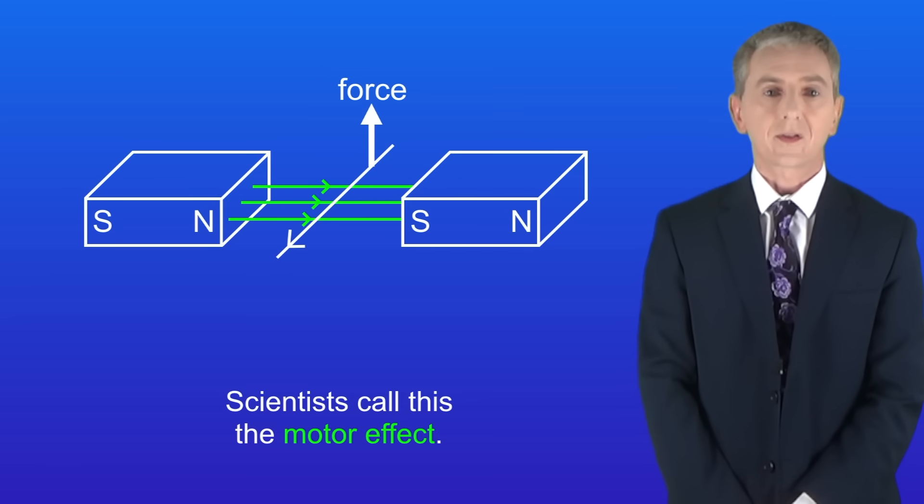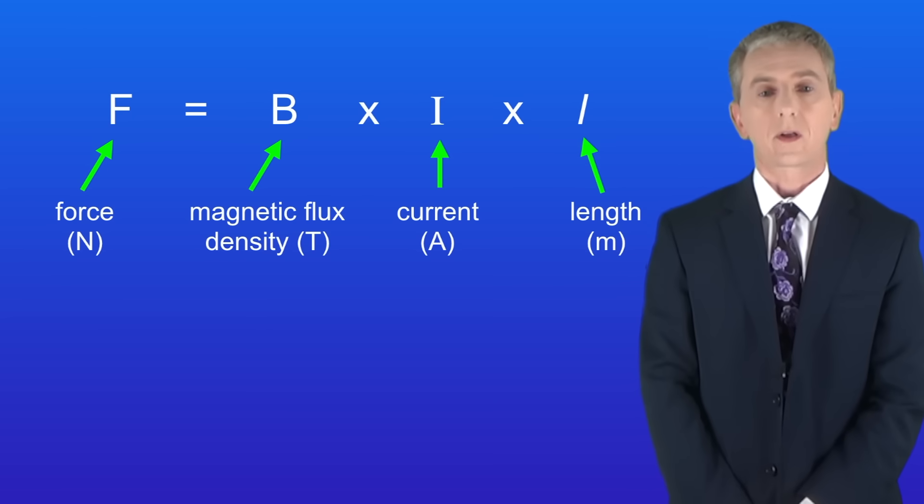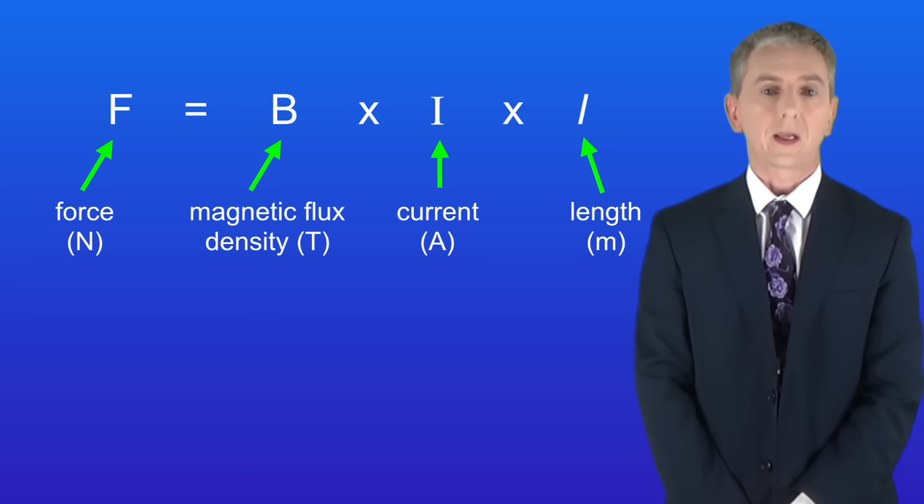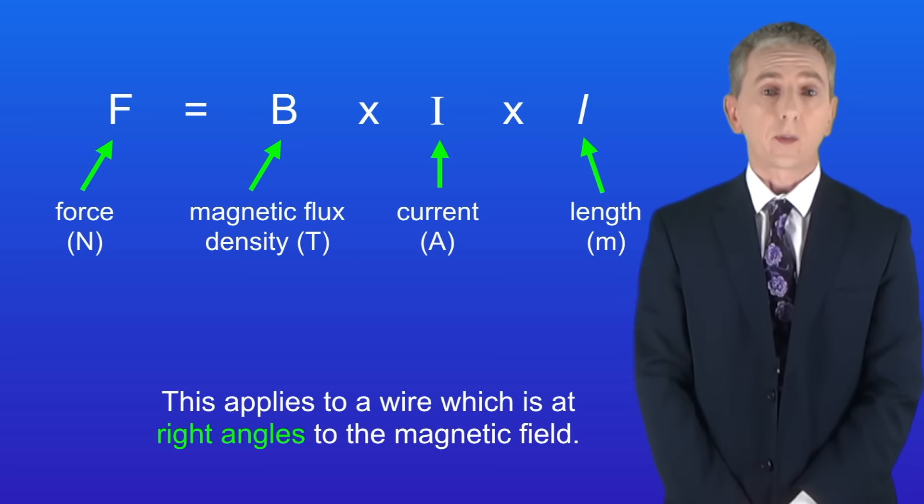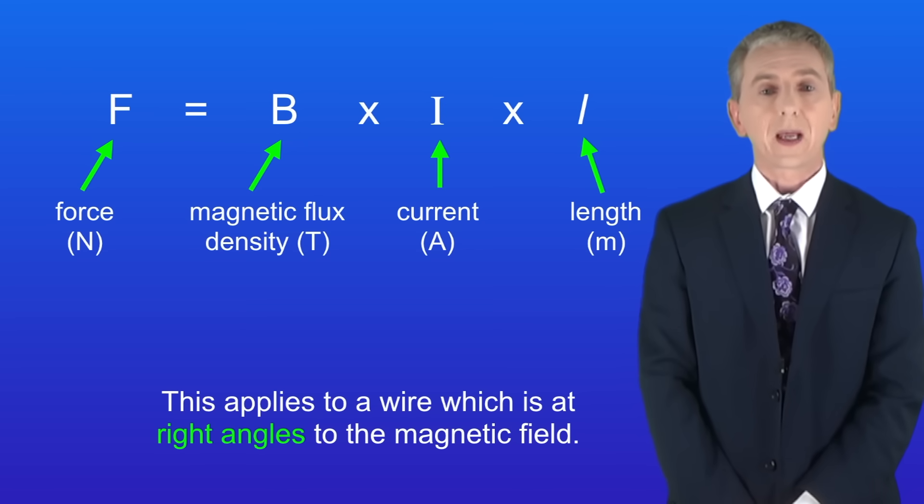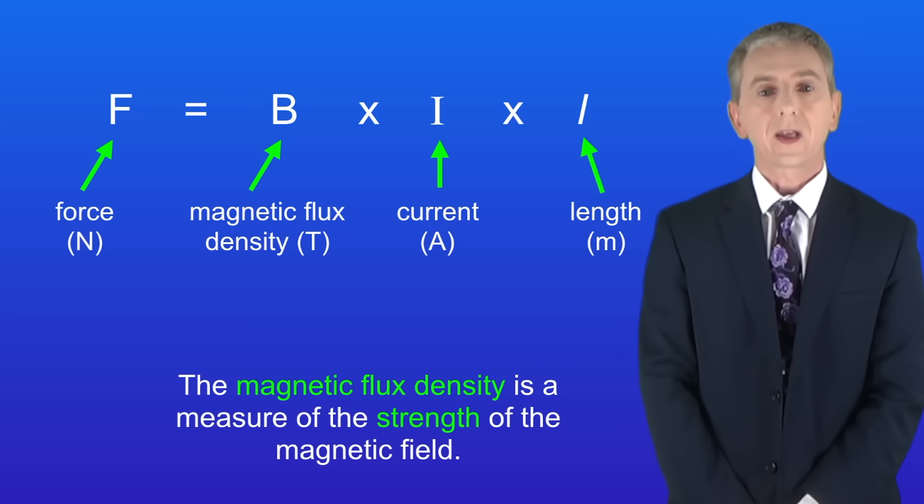We can calculate the size of the force using this equation. The force in Newtons equals the magnetic flux density in Tesla multiplied by the current in amperes multiplied by the length of the wire in meters. You are given this equation in the exam so you don't need to learn it. Now there are a couple of points about this equation. Firstly, this applies to a wire which is at right angles to the magnetic field. Secondly, the magnetic flux density is a measure of the strength of the magnetic field.